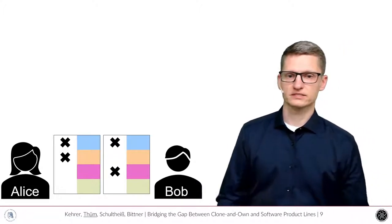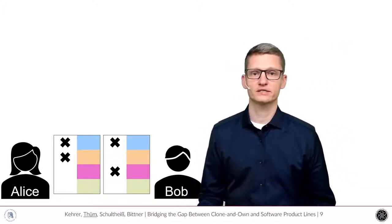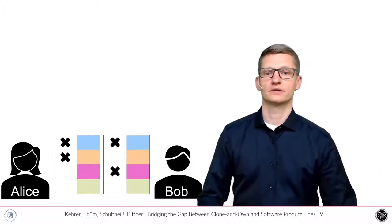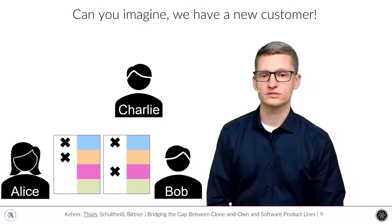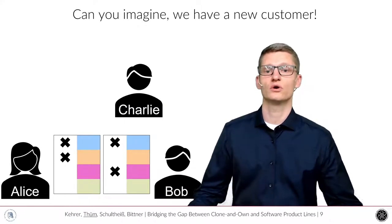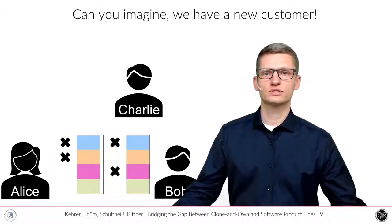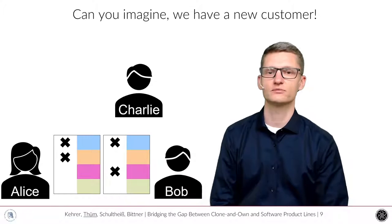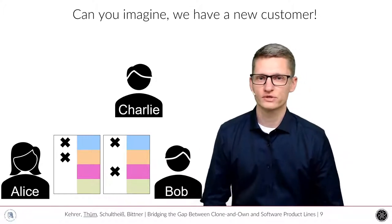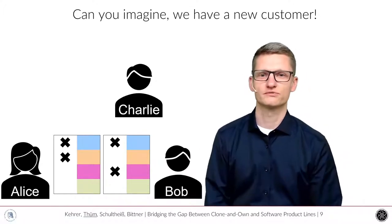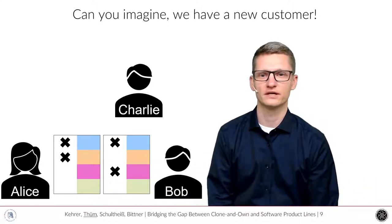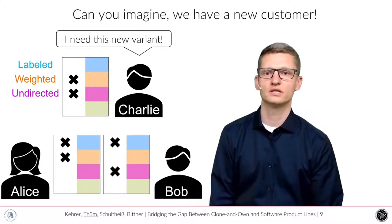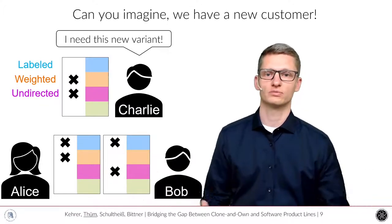So now we come to the case of Alice and Bob. Of course, in practice, we have many development teams and we have more variants than just two. And in the case of Charlie, it's another story because he even needs a new variant. So Charlie comes up with good news. Can you imagine we have a new customer? And as Alice and Bob are using the VariantSync project, Alice is looking for the sparkling wine and Bob looks for the glasses because they do not need to do anything. They just fix the configuration. They specify these are the features that we need and this whole variant can be derived automatically.